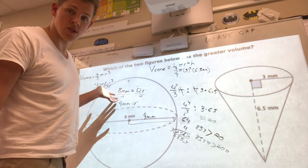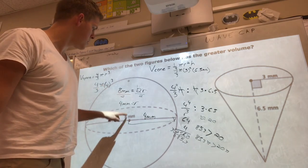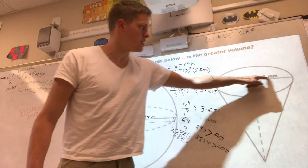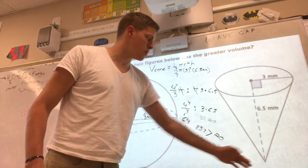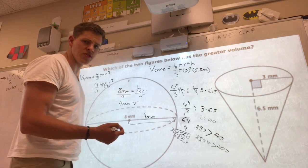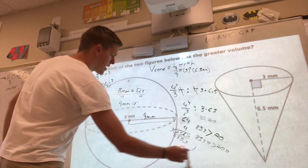Alright, so our answer is the sphere is going to have a greater volume given that the diameter is 8 millimeters, and that the cone has radius 3 millimeters and height 6.5 millimeters. The last part of it, so our answer is going to be 85.3 pi.